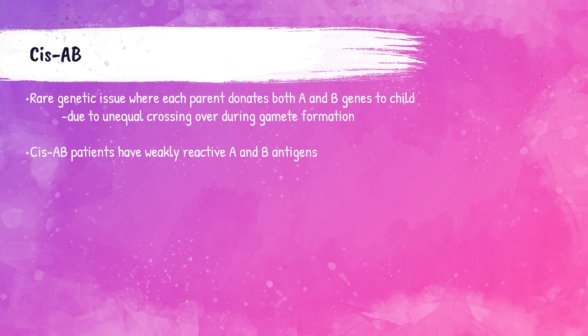Cis-AB is when a patient inherits both A and B genes from one parent and an O gene from the other — the inheritance of three ABO genes instead of two. This causes weakly reactive A and B antigens, so the front type will be weaker than normal, and this is also an issue associated with group 4 discrepancies. This concludes the presentation on ABO blood grouping. If you liked this lecture, please remember to like this video and subscribe to my channel, and leave any questions in the comments section.